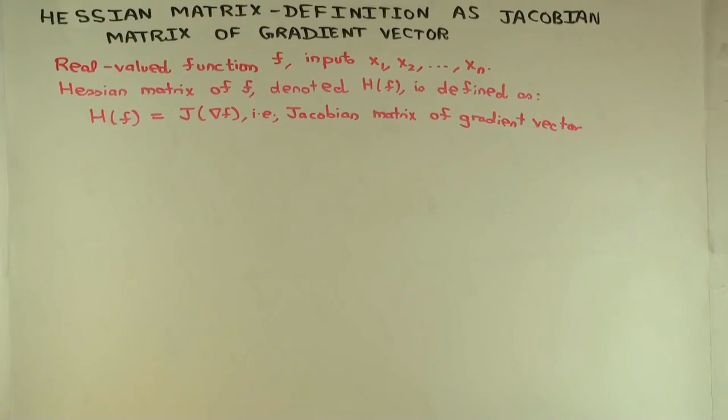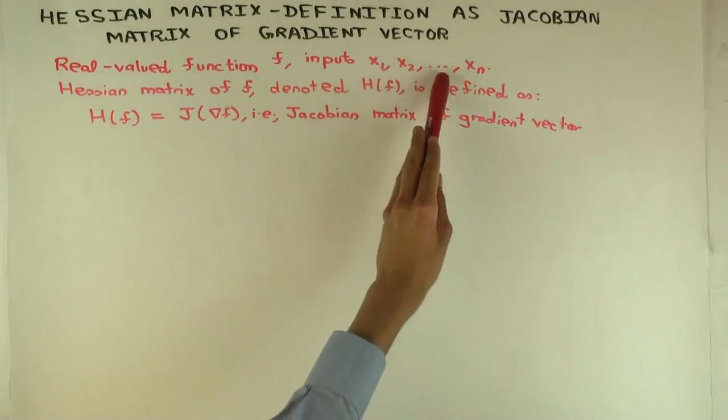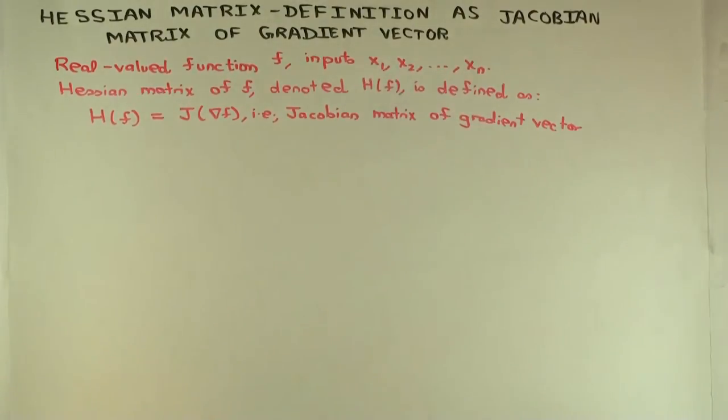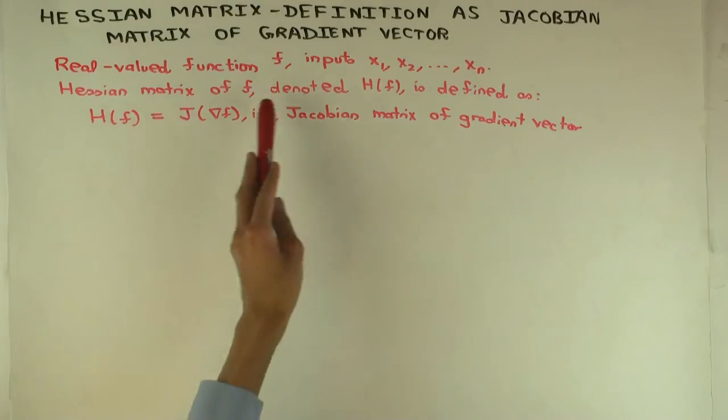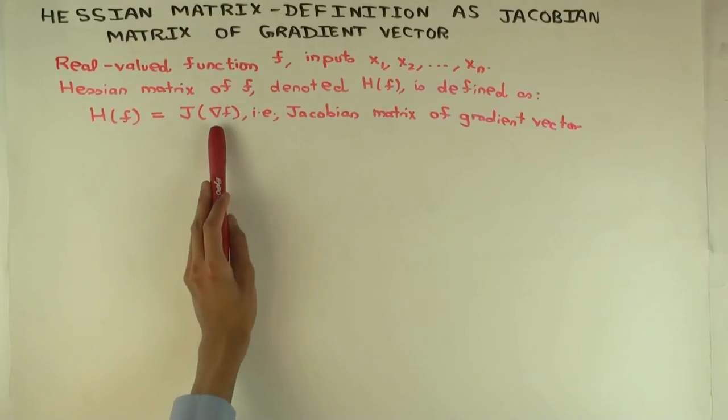In this talk, I'm going to define the Hessian matrix, which is the correct notion of second derivative for a real-valued function. That just means a function with real outputs and with n inputs, so there's multiple inputs but a single output. First I'll just say quickly what it is and then I'll explain why it's the second derivative. So the Hessian matrix of F, denoted HF, is defined as the Jacobian matrix of the gradient vector of F.